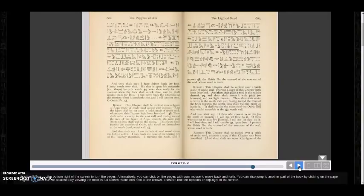Going on here. It says, And thou shalt say, I have driven back thy foes, I keep watch over there. He that is upon his mountain, i.e. Anpu, and who is Anpu, that is Anubis, keepeth watch, over there ready for the moments, thy foes shall attack thee, and he shall repulse them for there. I will drive back the crocodile at this moment, when it attack thee, and I will protect thee, O Osiris knew.